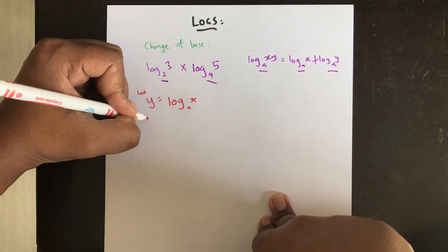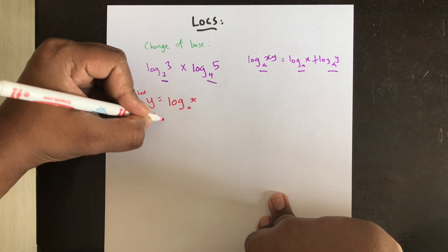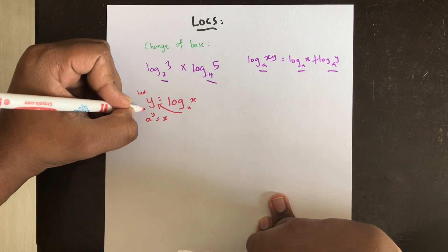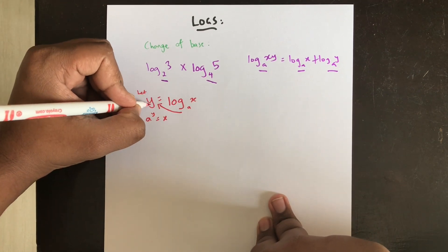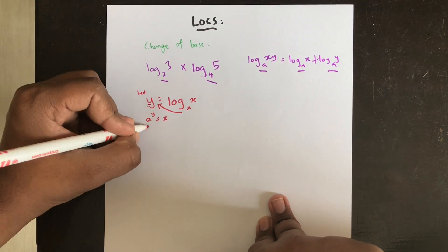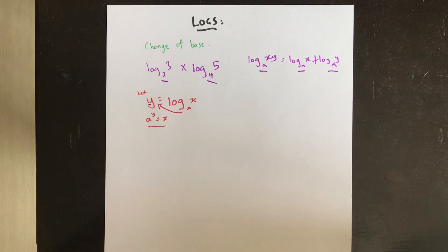So from this we can say that a to the power of y is equal to x, because I'm moving the a to the other side of the equation. So this becomes the power and this becomes the base and this is just left on its own. So a to the power of y is equal to x.